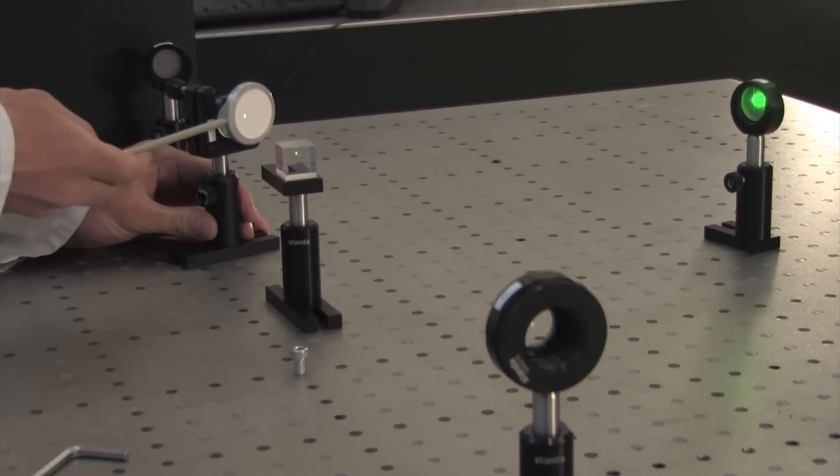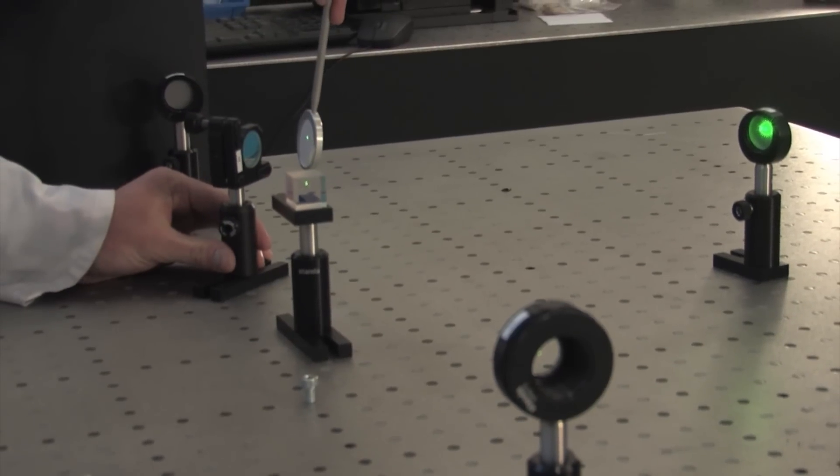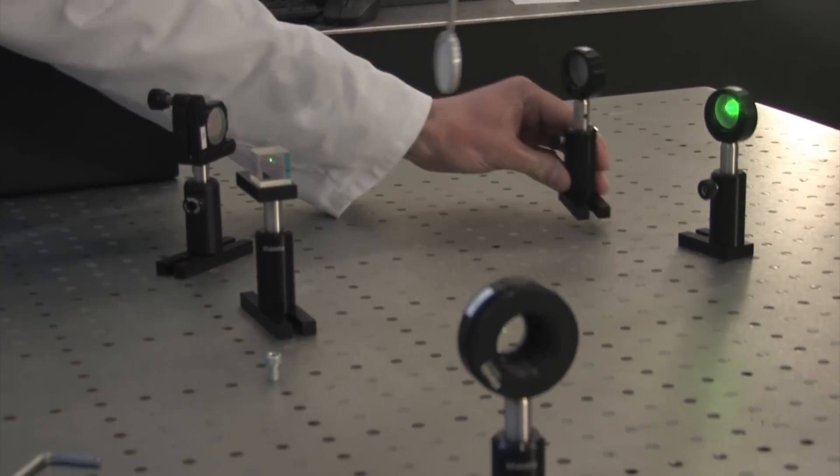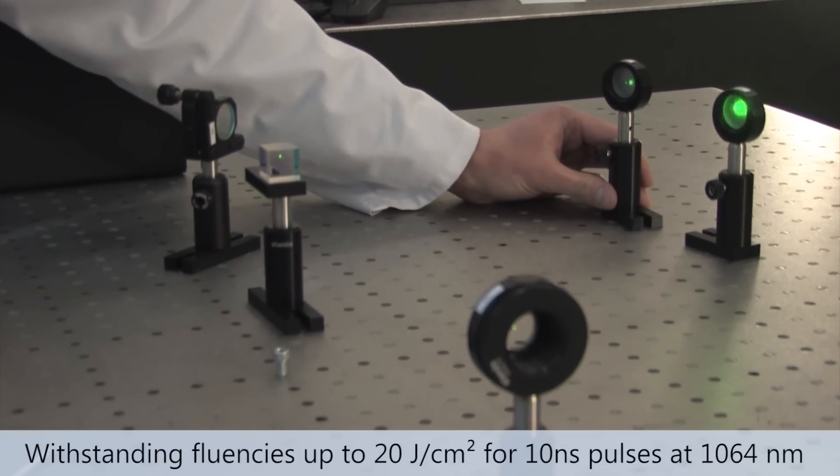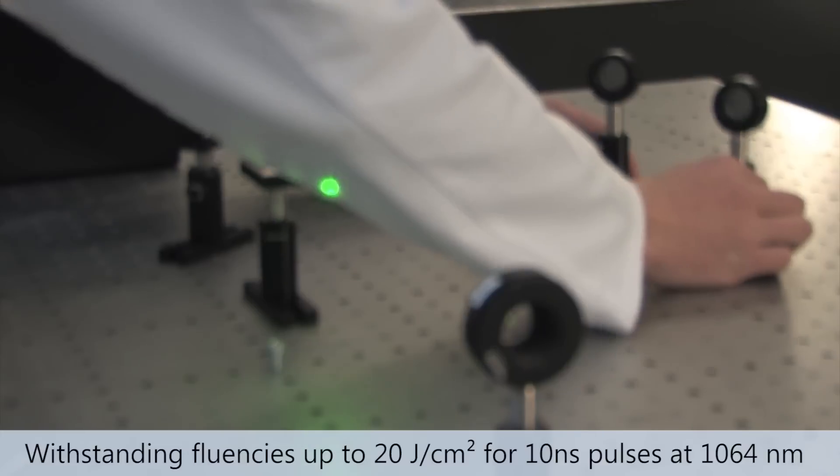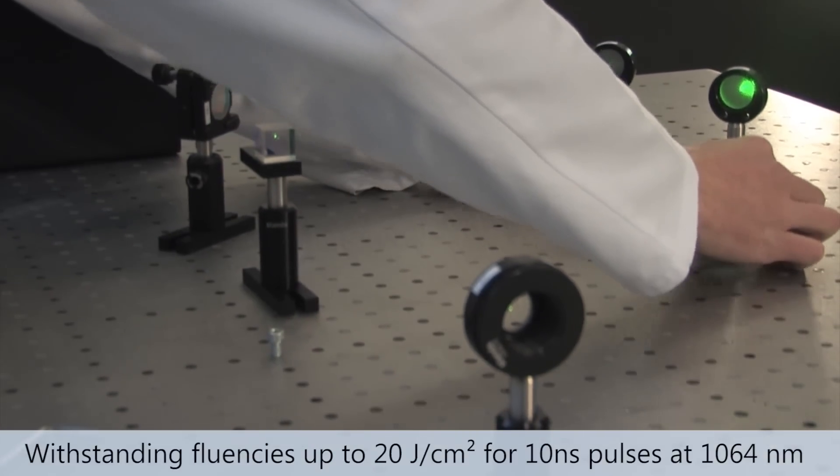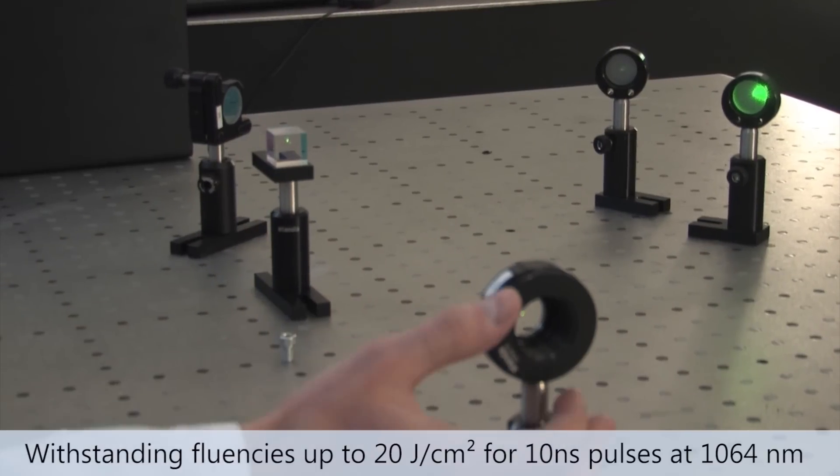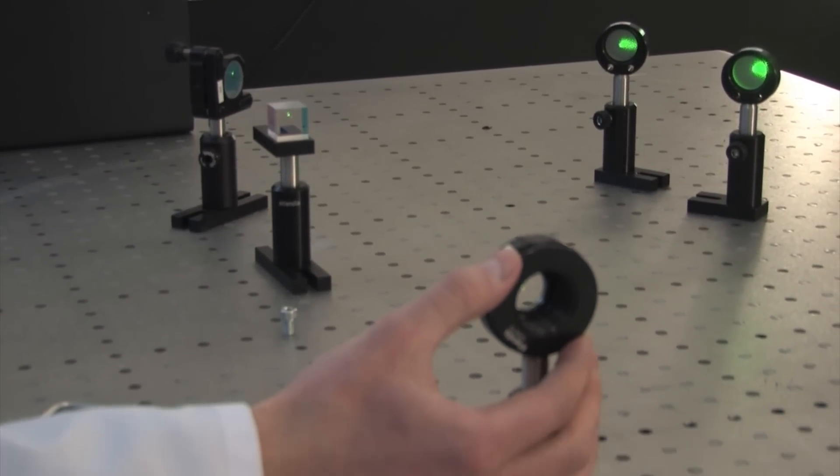Altegna presents polarizing cubes which are suitable for high-power applications. These cubes do not contain optical cement, and can withstand energy fluences up to 20 Joules per square centimeter for 10 nanosecond pulses at 1064 nanometers.